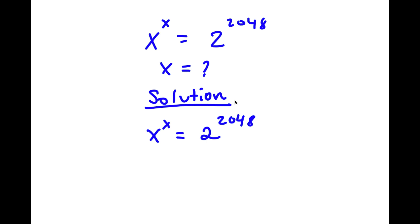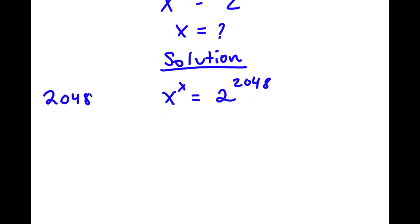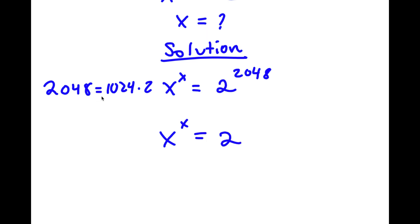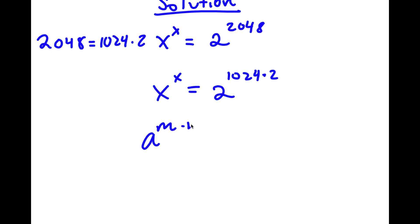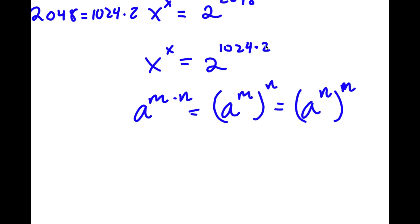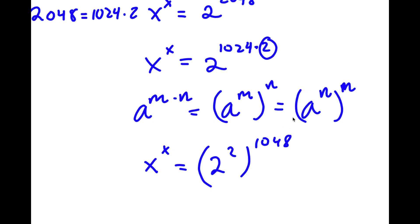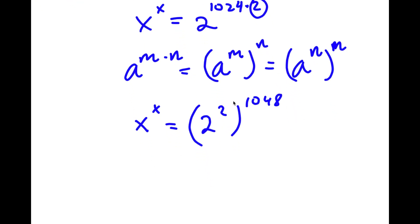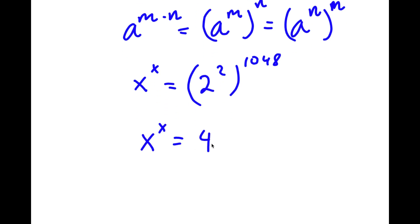Now 2048 is the same thing as 1024 times 2. So I'm going to replace 2048 with 1024 times 2. And if I have something in the form a to the power of m times n, this is the same thing as a to the power of m to the power of n. So I'm going to rewrite 2 to the power of 1024 times 2 as 2 to the power of 2 to the power of 1024. Now 2 to the power of 2 is simply 4. So now I have x to the power of x is equal to 4 to the power of 1024.